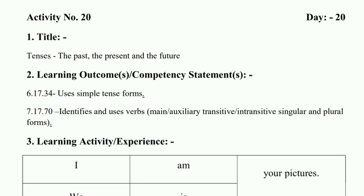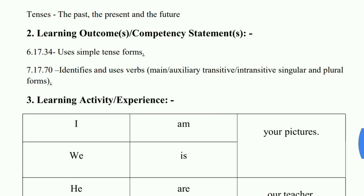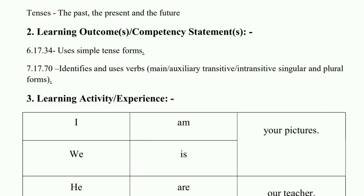Tenses means 'kaala' — taplal koon koon te kaal pahije: the past means 'bhut kaal,' the present means 'vartaman kaal,' and the future means 'pavishya kaal.' Learning outcomes and competency statements: uses simple tense forms — and these simple tense forms we need to use.